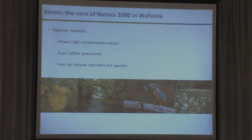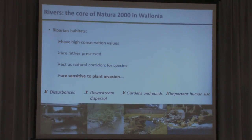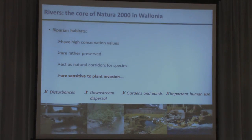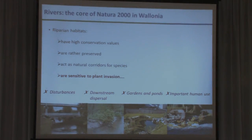Rivers and forests are included in the Natura 2000 network and also act as corridors, which makes sense in a network. However, because of the high pressure of humans on the rivers, we might expect these habitats to be sensitive to plant invasion, notably because of disturbances from construction work, downstream dispersal once a species is established along the bank, and proximity to gardens where many species can escape.